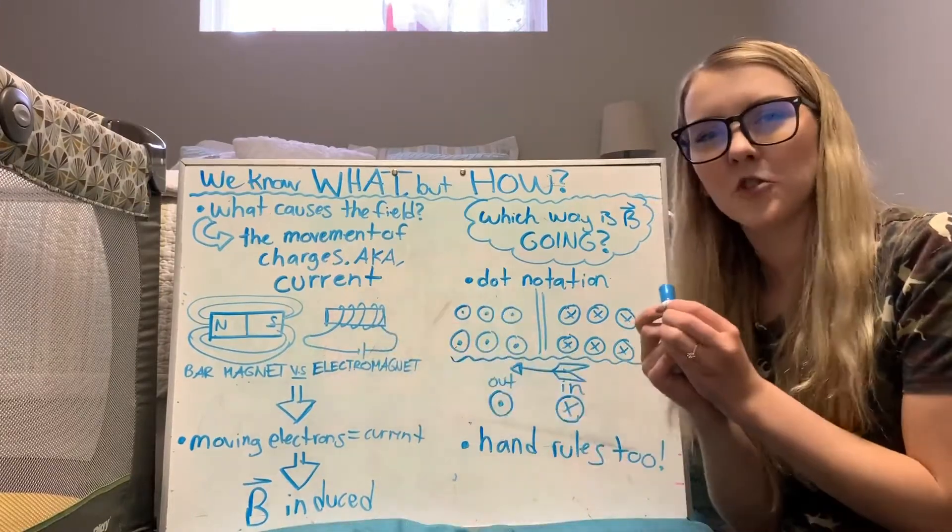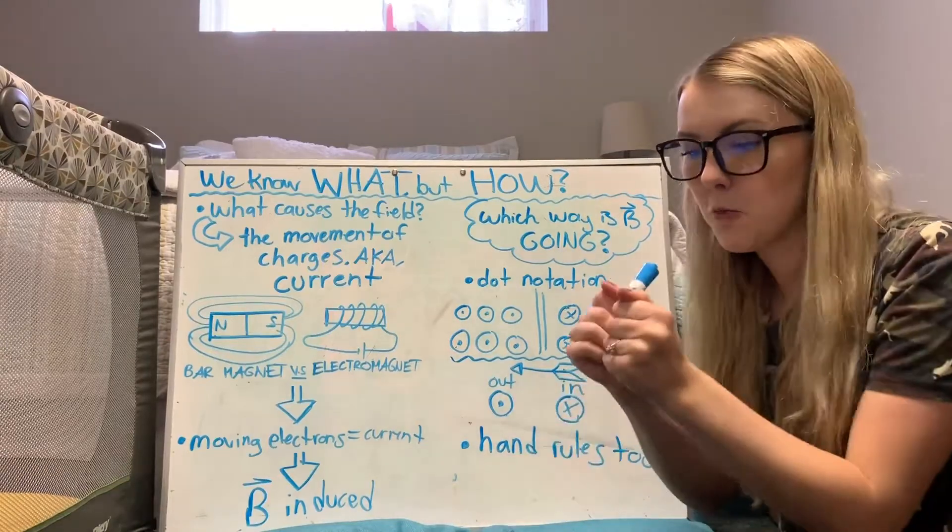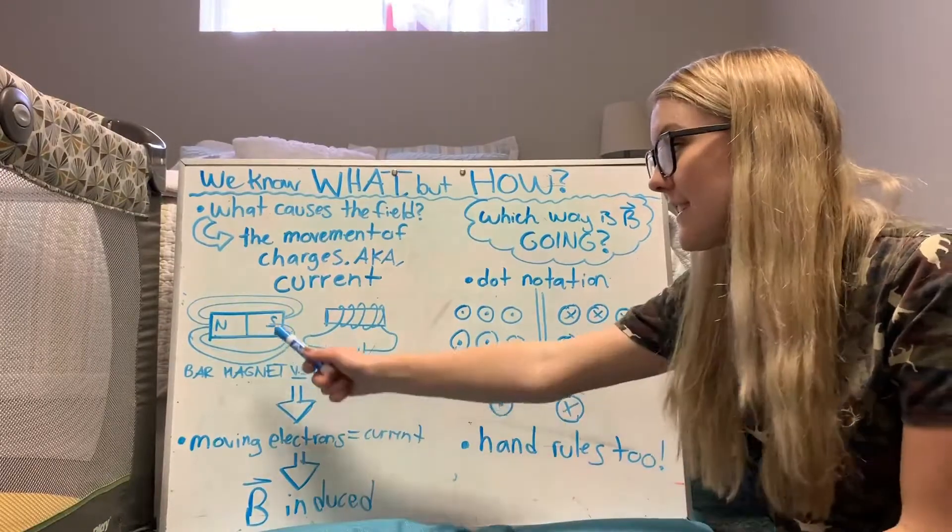And there actually is a current, it's just a slightly different kind of current than we normally think about. So the bar magnet has electrons in it and when the electrons move around that is another way of saying that there are moving little charges in there, so that makes a current which then creates the field around it.